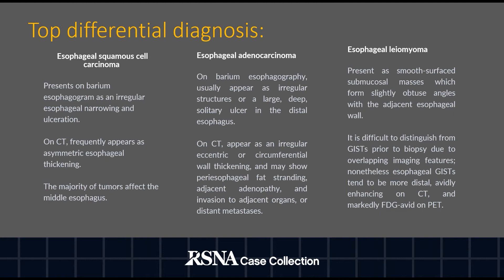Esophageal adenocarcinoma on barium esophagram usually appears as irregular strictures or a large deep solitary ulcer in the distal esophagus. On CT it appears as irregular eccentric or circumferential wall thickening and may show periesophageal fat stranding, adjacent adenopathy, and invasion to adjacent organs or distant metastasis.